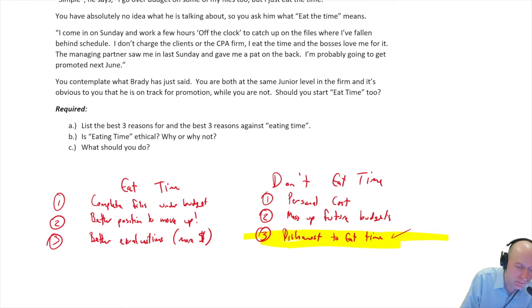Now, I will tell you, and so what should you do? Obviously, I think you should continue to report your time accurately. Now, a difference between an A and an A plus answer here is not only do they say, oh, because of these reasons, I think we should not eat the time or they might argue to eat the time. But what should you do about Brady? Do you have an obligation now to report Brady that he's doing all this work off the clock? Is it foolish to report Brady? Students that tackle that side of the dilemma, that's more of an A plus level paper.